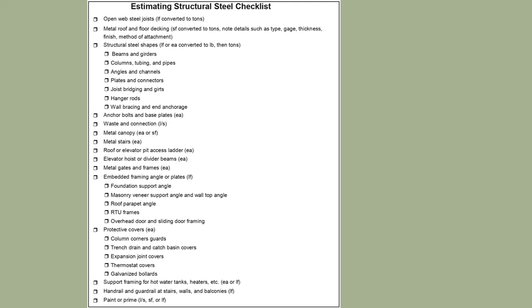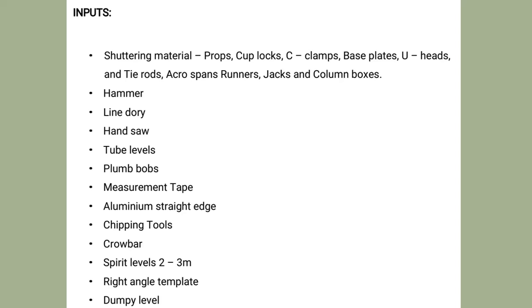Now we will learn about formwork — what exactly formwork contains, its properties, and steps. The inputs, meaning materials you should have with you, include: shuttering material, props, cup locks, C-clamp, base plate, U-head, tie rod, cross span, runner, column boxes, hammer, line dory, hand saw, tube level, plumb bob, measuring tape, aluminum straight edge, chipping tools, crow bars, spirit level, two to three meter right angle template, and dumpy level.